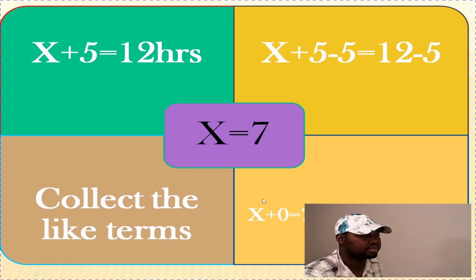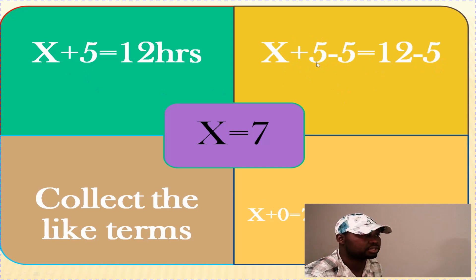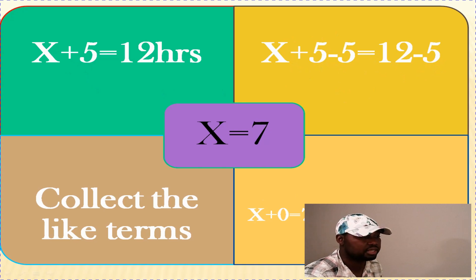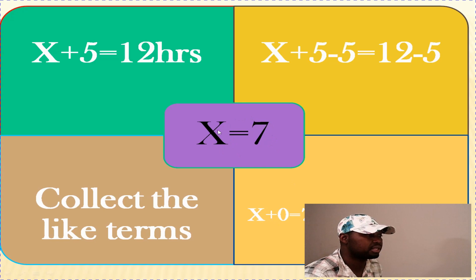Now x is isolated. Positive five minus five — it's like you have five dollars in your pocket, you pay somebody five dollars, and you have nothing left — equals zero. So x plus zero equals seven, and x plus zero is the same thing as x. Our answer is x equals seven. That means the girl has already studied for seven hours so far.